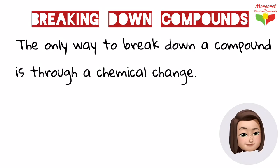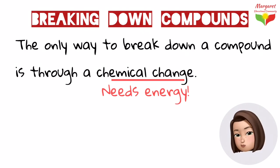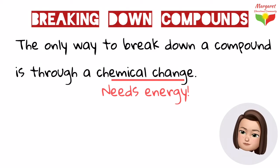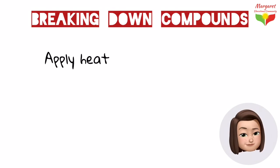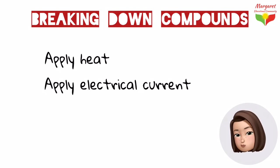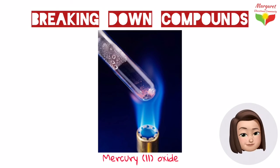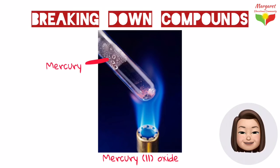Compounds can be broken down into the elements they were made of, but the only way to break down a compound is through a chemical change, since compounds are formed chemically. Chemical changes need energy, so there are two ways to add energy to break down a compound: either by applying heat or by applying electric current, because heat and electric current are forms of energy. For example, the compound mercury(II) oxide, when heated, breaks down into the elements mercury and oxygen, as shown in this picture.